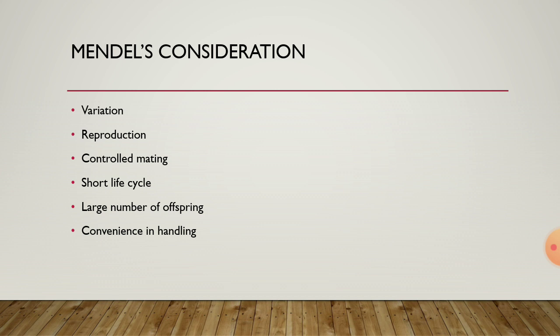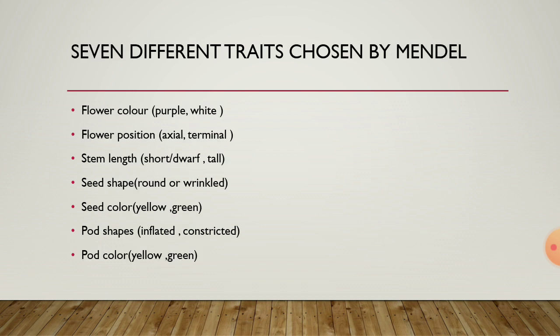Mendel found the edible pea plant best for his experiment due to its various contrasting characters. These contrasting characters are flower color, flower position, stem length, seed shape, seed color, pod shape, pod color, etc.